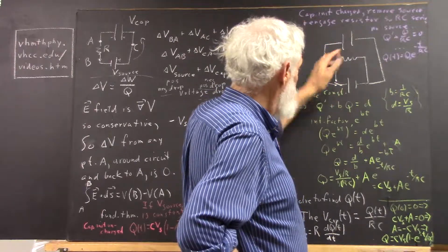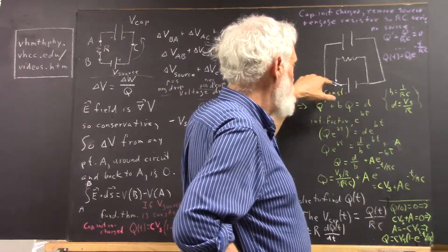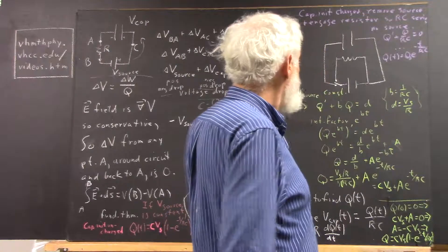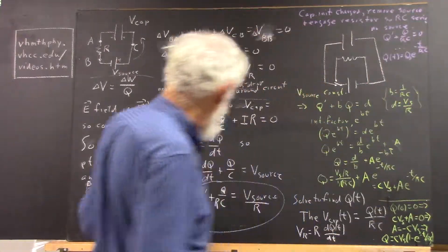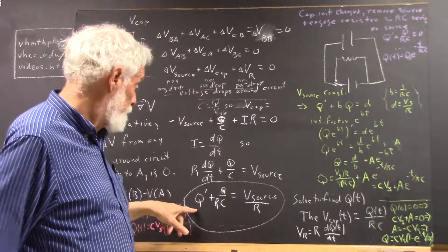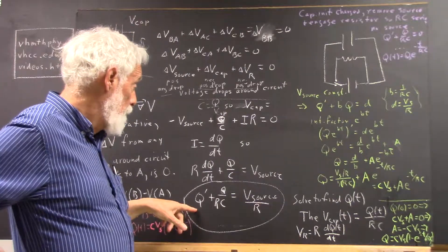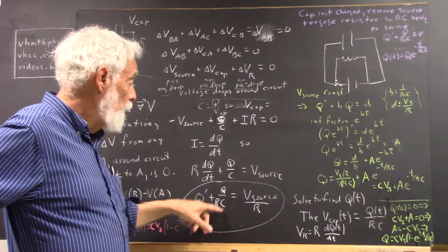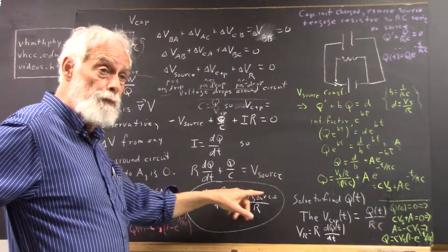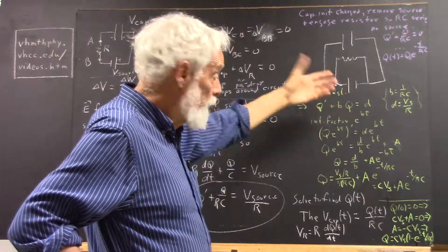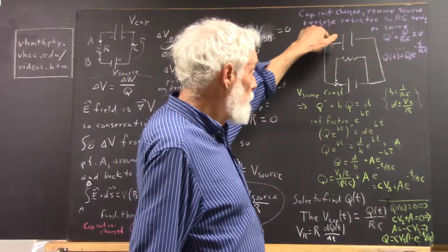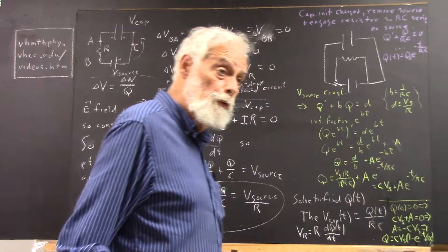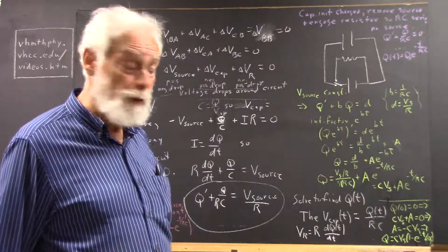The equation then, when we only have the capacitor and the resistor in the circuit, is just going to be q', which is your current, plus q over RC equals zero because we've taken the source out. There is no source. The only two voltages is we have the voltage drop across the capacitor and the voltage drop across the resistor. That has to add up to zero.